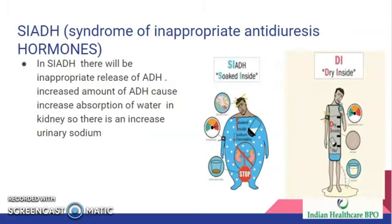Another type of disorder is the syndrome of inappropriate antidiuretic hormone, or SIADH. In this case there is inappropriate release of ADH, so there is an increased amount of ADH which causes increased reabsorption of water in the kidney. As a result, the sodium content in the urine will be increased.